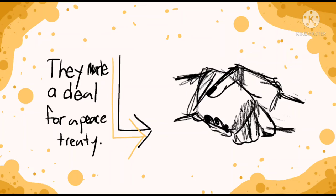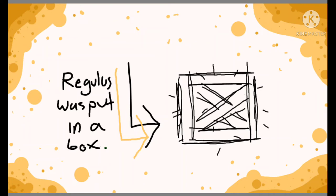So they sent him back. The Carthaginians decided that they were going to torture him to death and put him in a box with nails in it, according to some stories. Other stories say it was a barrel or a barrow. But that was how he died.